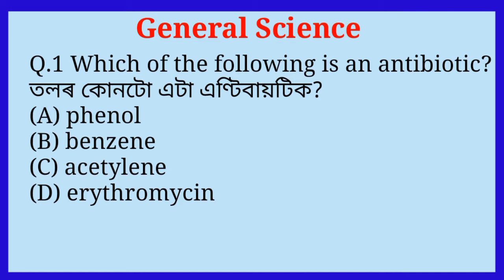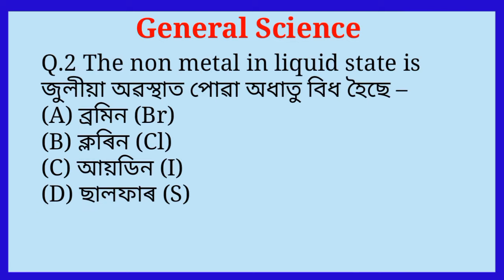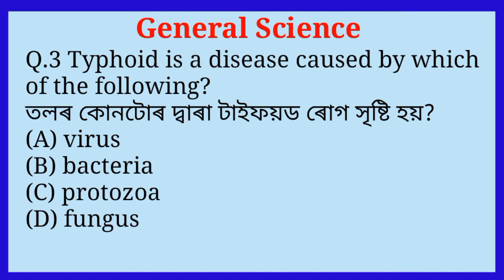Question number one: Which of the following is an antibiotic? The answer is option D, erythromycin. Question number two: The non-metal in liquid state is which option? The answer is option A, bromine.